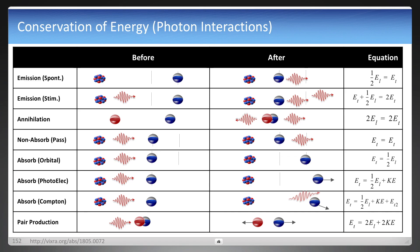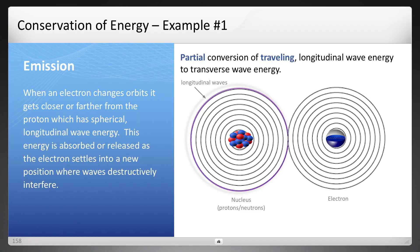But to illustrate the conservation of energy, pick on three examples. Starting with this one, which is the photon that's emitted in an atom. Now in this case longitudinal waves are just shown as circles there.